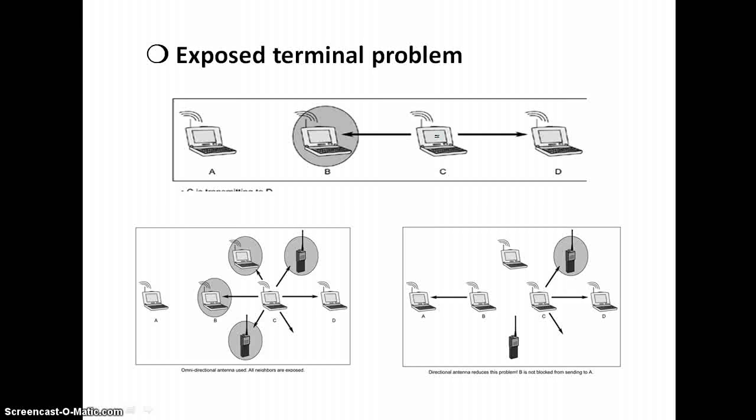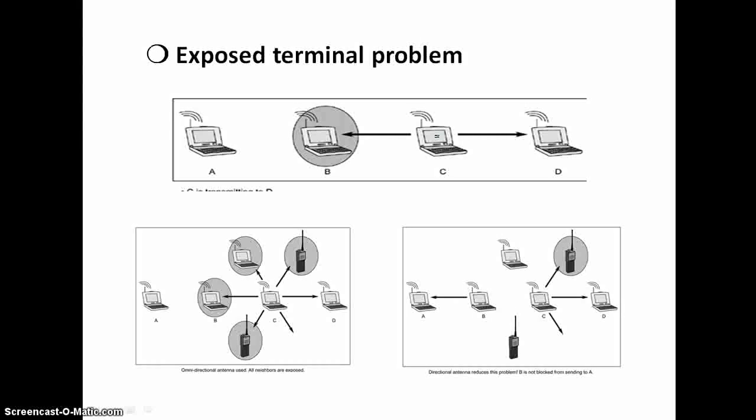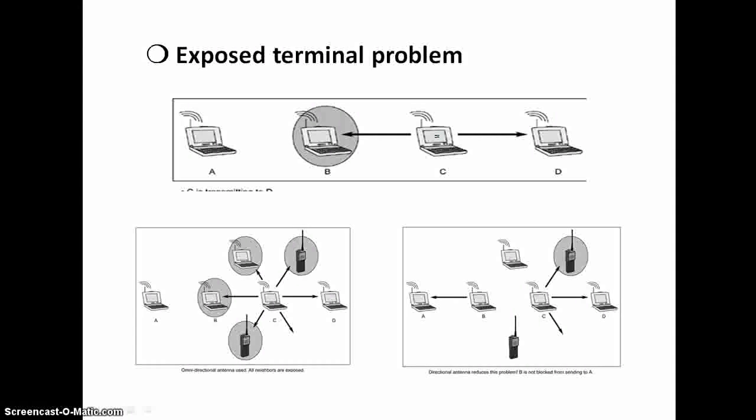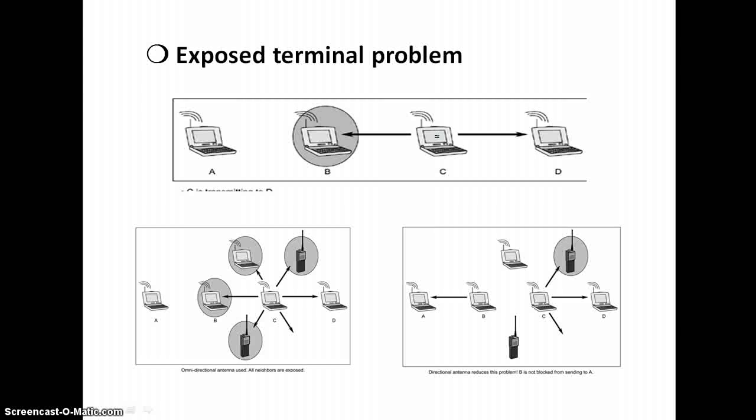The solution to the exposed terminal problem: we use separate control and data channel like PAMAS, DBTMA, or we use antennas like directional antennas. Omni-directional antennas can result in several surrounding nodes being exposed, thus prohibiting them from communicating with other nodes, lower network availability and system throughput. If directional antennas are employed, the problem of network availability and system throughput can be mitigated.